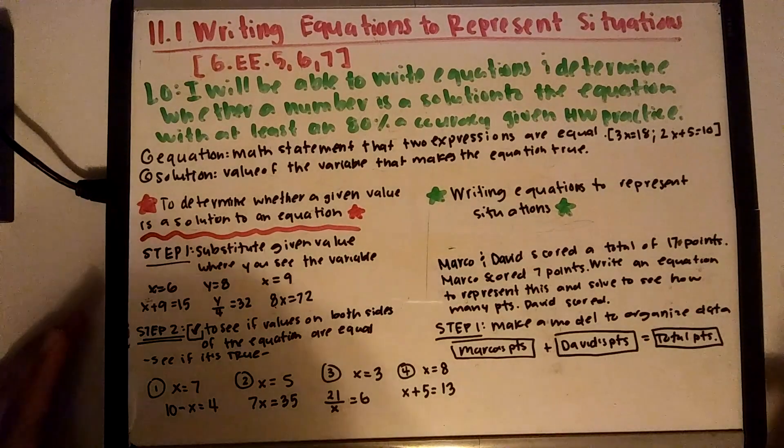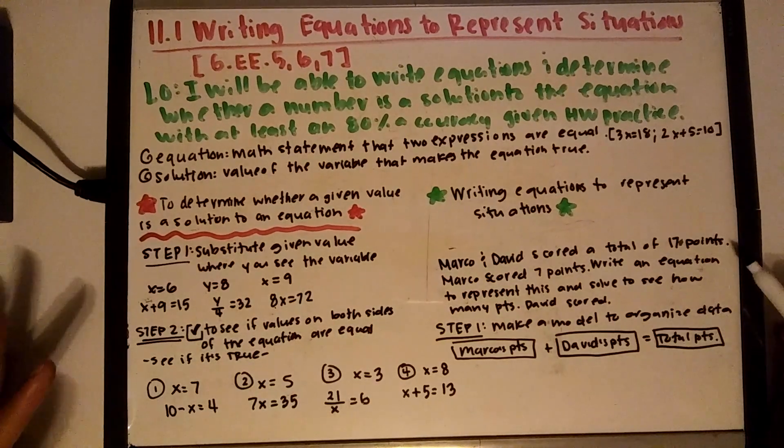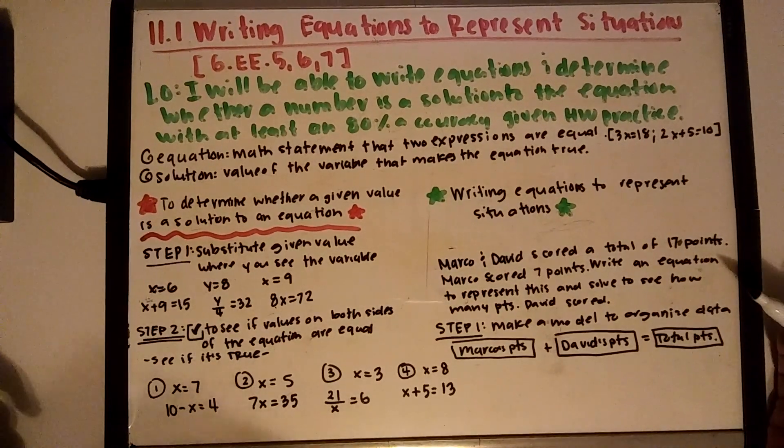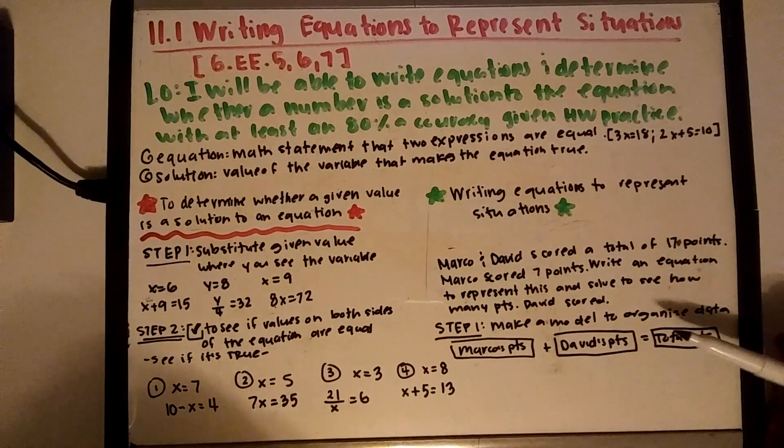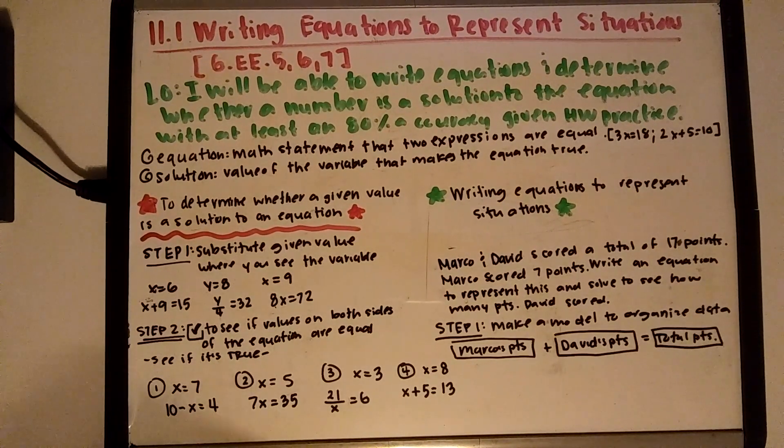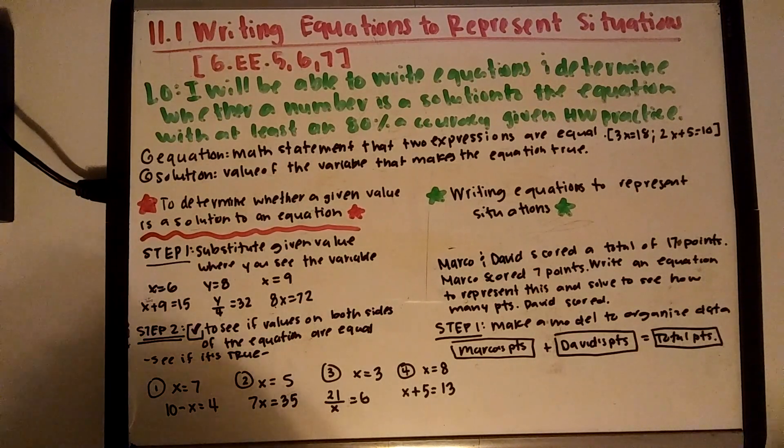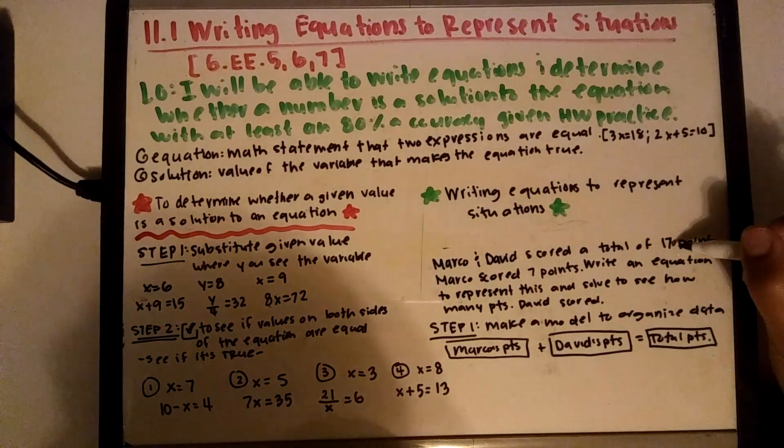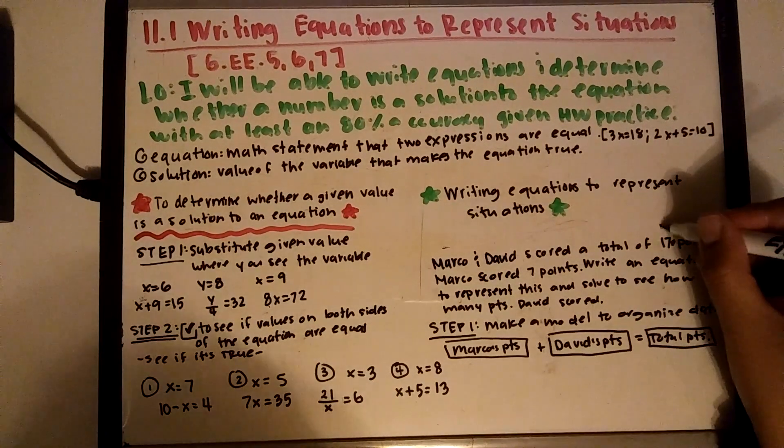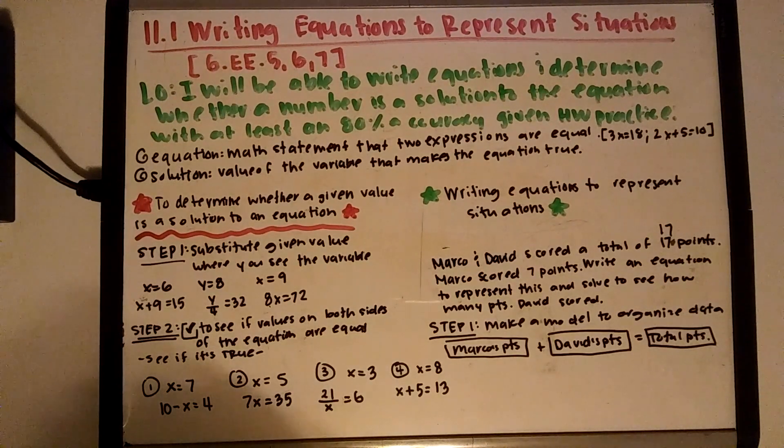Okay, so let's go ahead and do this. Now this one right here is a little more complicated. I know that you guys don't usually like word problems, but this is actually a real life situation that you can use this skill for. So I'm given a problem where it says Marco and David score a total of 17 points. Marco scores 7 points. Write an equation to represent this and solve to see how many points David scored.